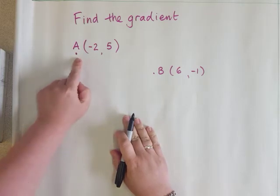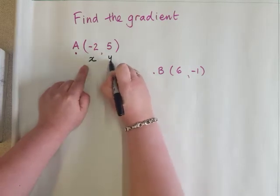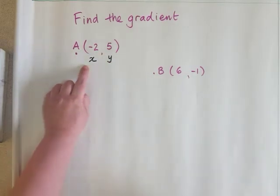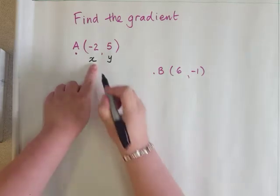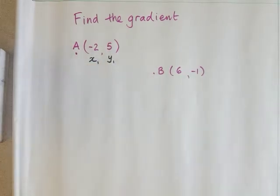This is the first point, point A, and in here we have the x-coordinate and the y-coordinate. Because it's the first point, I'm going to write a little one underneath the x and y. That's to show that it's the first point.